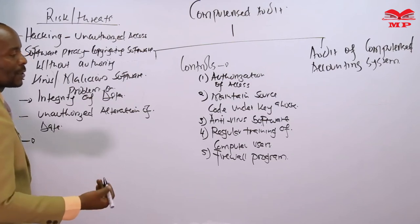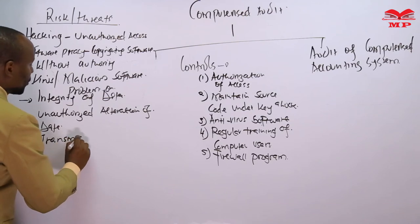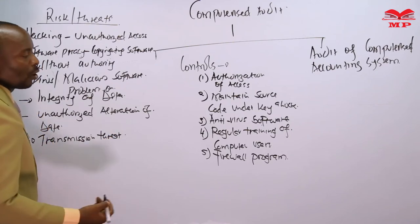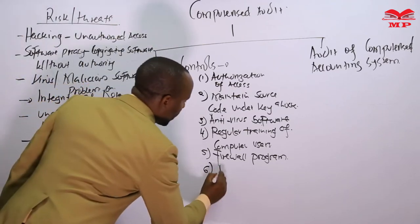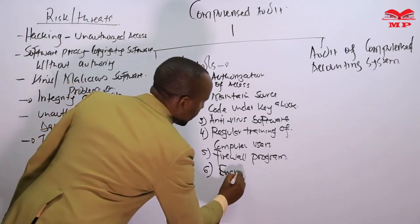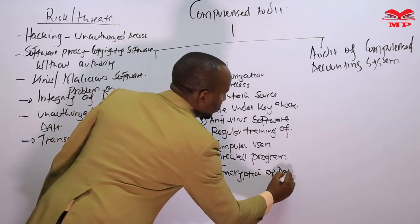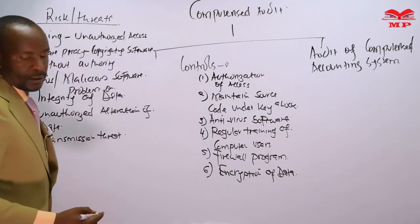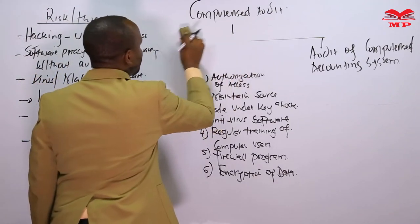If you are not using firewalls and you fear that data may be stolen, destroyed, or altered during transmission — that is, transmitting data from one place to another and fearing it may be altered or stolen online — you can address this with encryption of data during transmission. That will work very well and forms part of the controls.